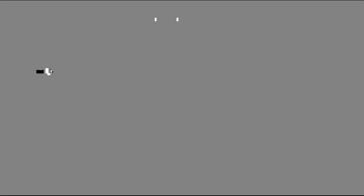This video, remember that labeling triangles, we use capital letters for vertices. We use lowercase letters to label the sides. The side opposite of vertex, the side opposite and the vertex share the same letter. It's just that one's capitalized and one's lowercase. The sum of angles in any triangle is 180 degrees.